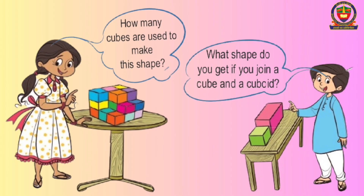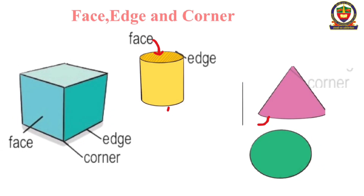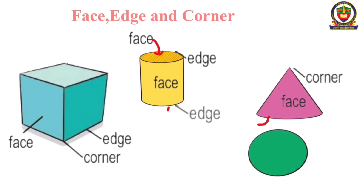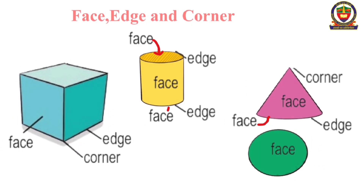Some more activities. How many cubes are used to make this shape? Count the cubes — 21. What shape do you get if you join a cube and a cuboid? When we join a cube and cuboid, we get a cuboid. We learn about cuboid, cylinder, cone and sphere.